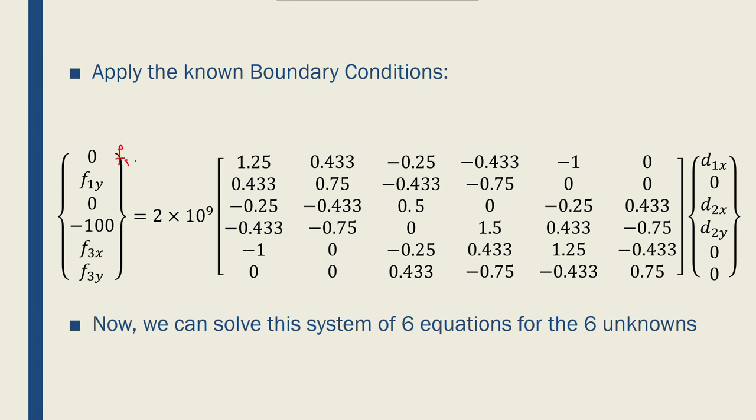So the known and unknown boundary conditions and forces and displacements are shown here. I can put them in that matrix and come up with this notation. So I know that f1x is 0, or actually this is f2x, and f2y is equal to minus 100. I know that d1y is 0, and d3x and d3y are also 0.